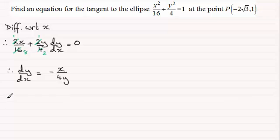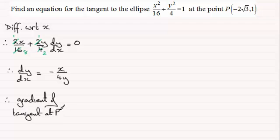So just substituting our values in we've got the gradient of tangent at P. That's going to equal minus x which is minus 2 root 3 and that's all divided by 4y. So it's just simply 4 and we end up with root 3 over 2. So that's one way that we could get our gradient.